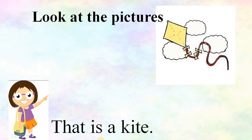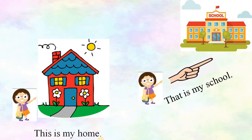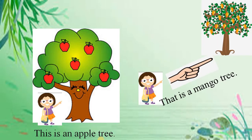Here, that is a kite. Look at that — I am using 'that' because the kite is far from me. Here are some more examples: this is my home, that is my school. Home is near for us, so we use 'this'. And school is far, that's why we use 'that'.